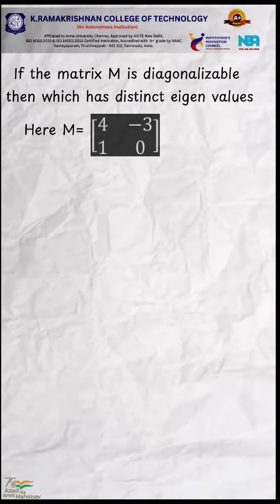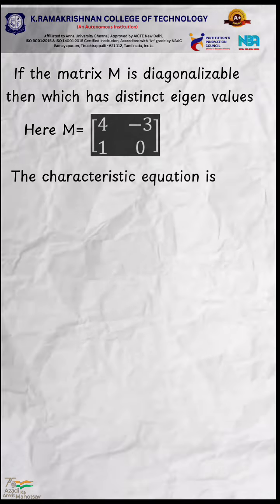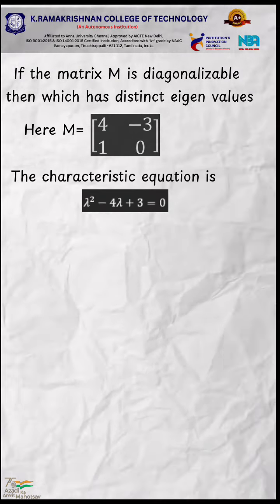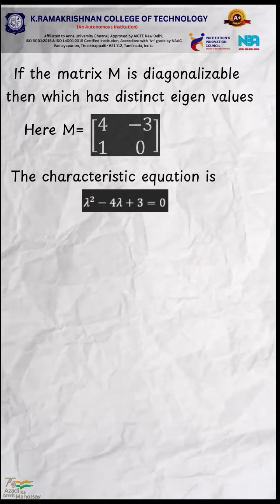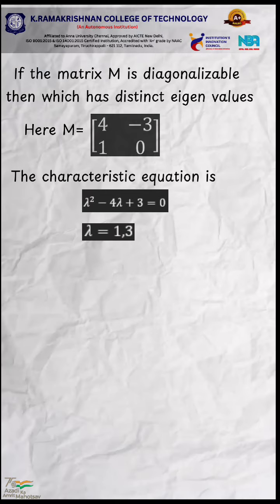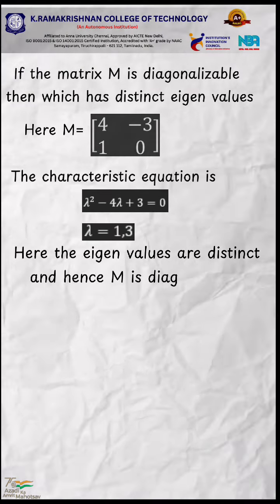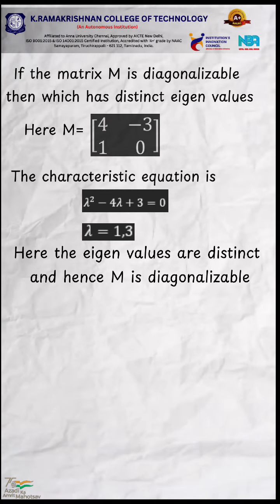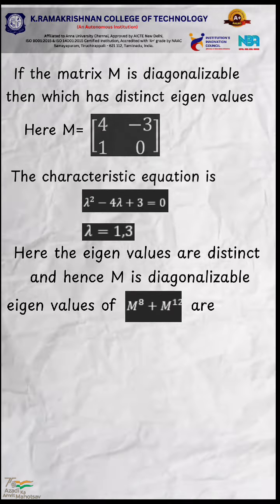The characteristic equation is lambda squared minus 4 lambda plus 3 equals 0, giving lambda equal to 1 and 3. The eigenvalues are distinct, and hence M is diagonalizable.